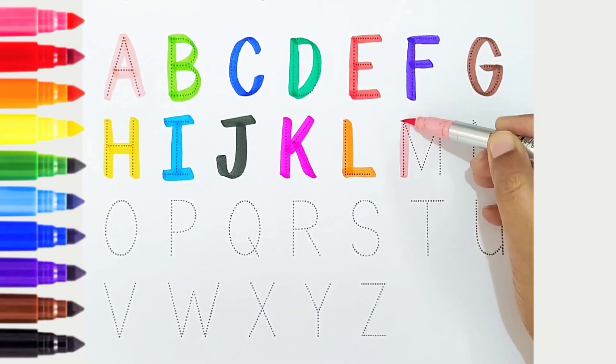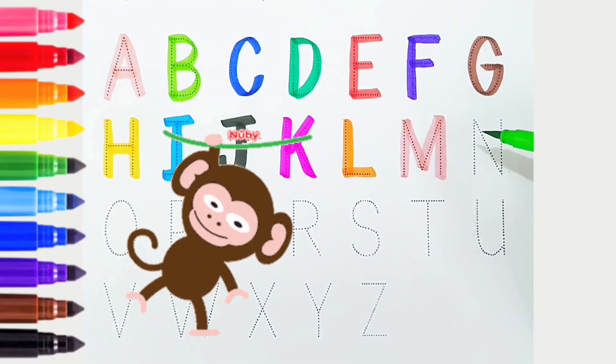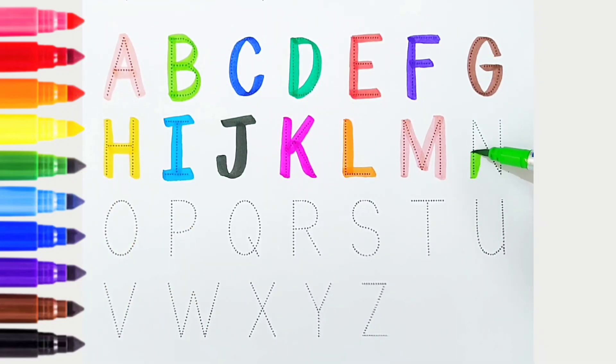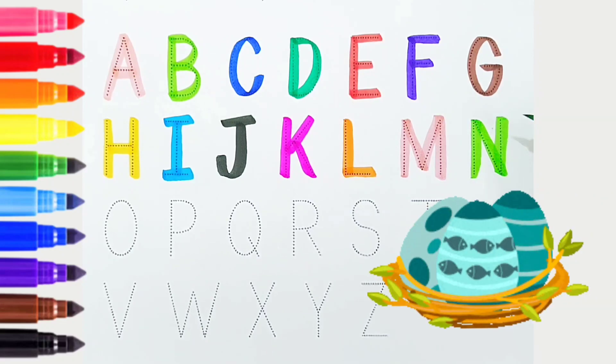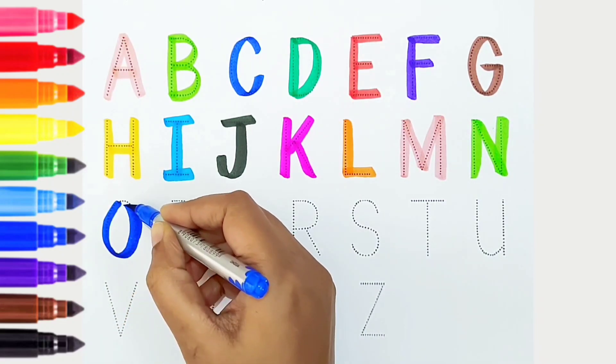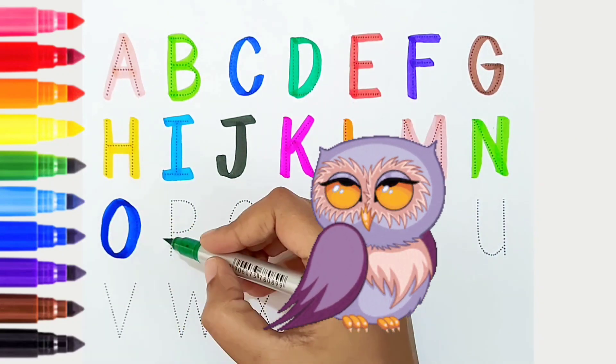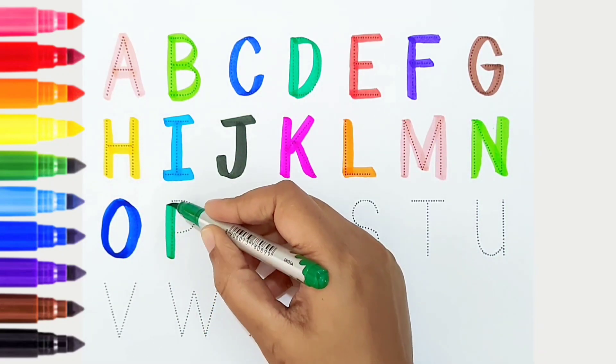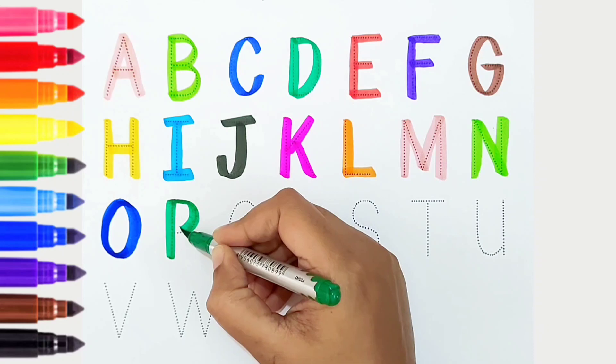M, light pink color, M is for monkey. N, light green color, N is for nest. O, dark blue color, O is for owl. P, dark green color, P is for pen.